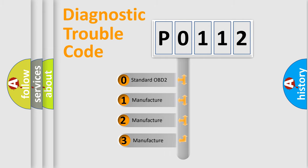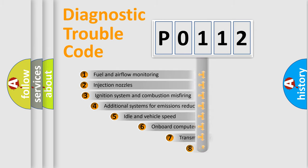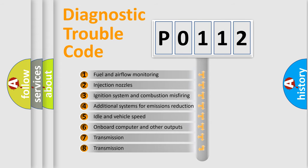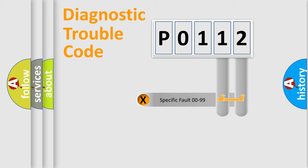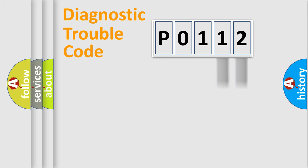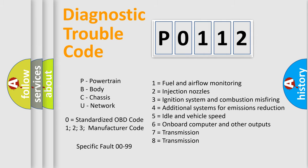If the second character is expressed as 0, it is a standardized error. In the case of numbers 1, 2, or 3, it is a more specific expression of a car-specific error. The third character specifies a subset of errors. This distribution is valid only for the standardized DTC code, and only the last two characters define the specific fault of the group. Such a division is valid only if the second character code is expressed by the number 0.